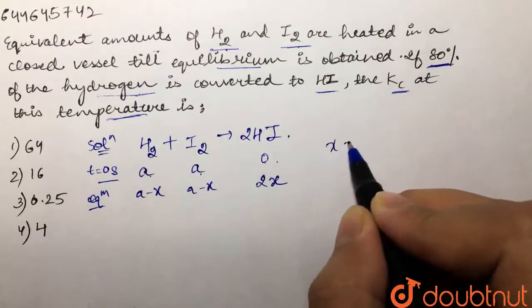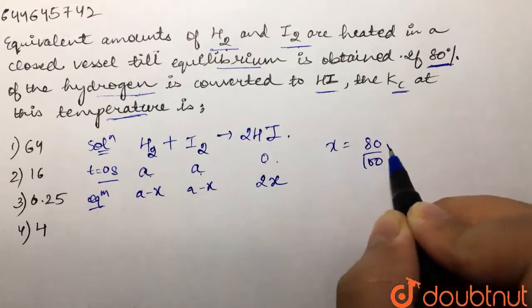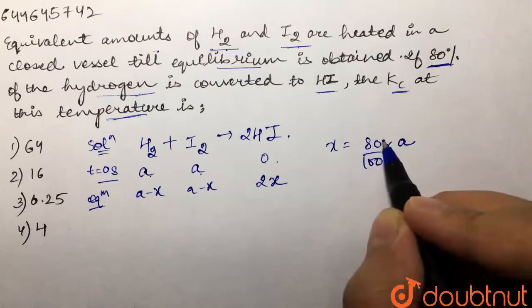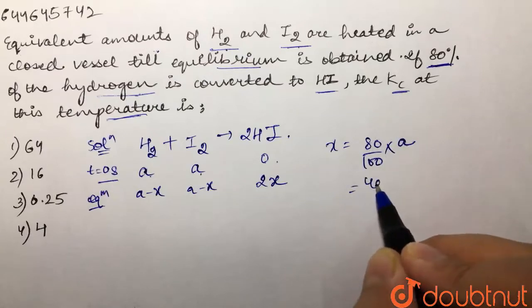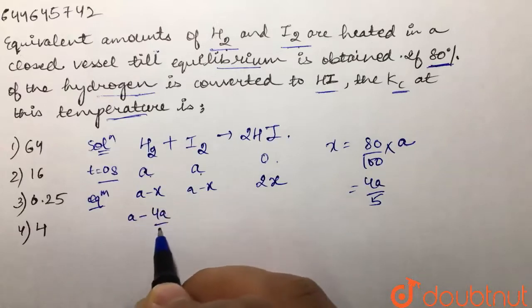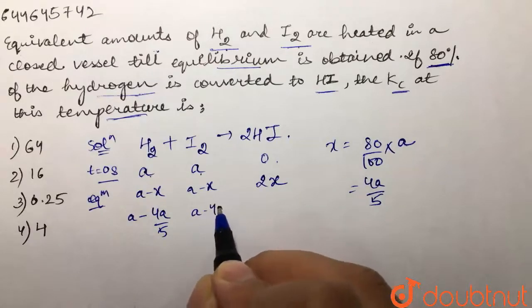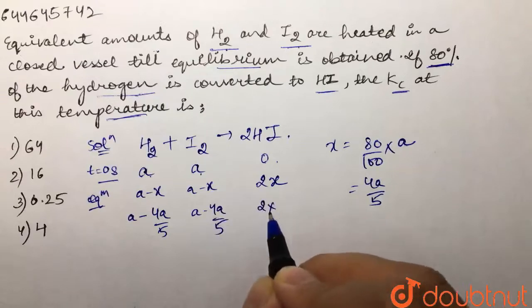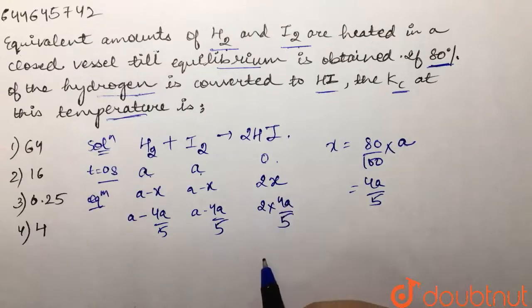So that means our x value is 80% of a. We can write this as 4a/5. So it would be a minus 4a/5, again it would be a minus 4a/5, and it would be 2 times 4a/5 over here.